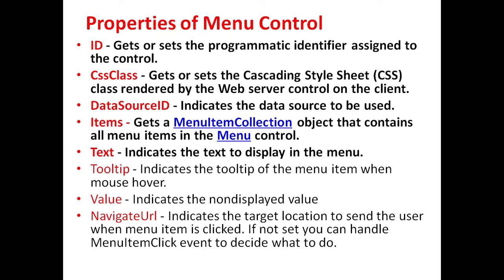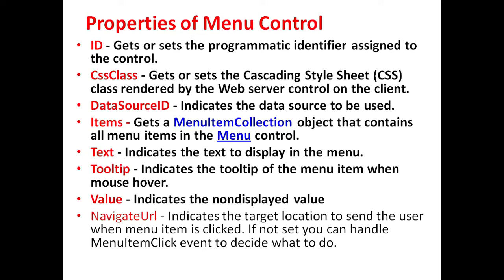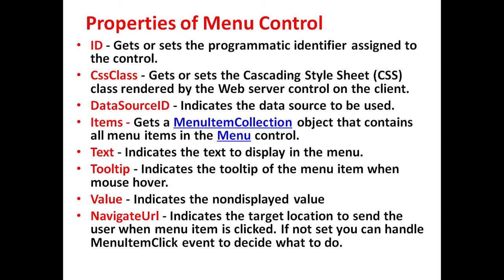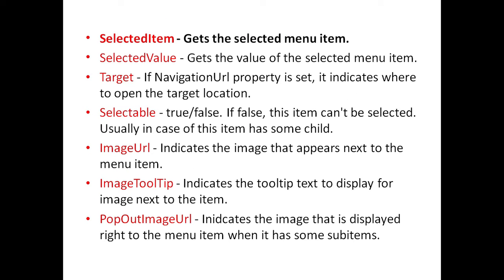Text property indicates the text to display in the menu. Tooltip indicates the tooltip of the menu item when mouse hover. Value indicates the non-displayed value. Navigate URL indicates the target location to send the user when a menu item is clicked. If it is not set, you can handle the menu item click event to decide what to do. Selected item property is used to get the selected menu item.